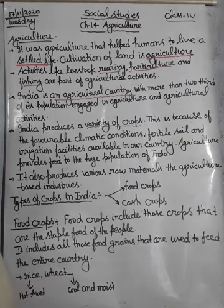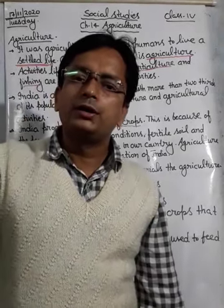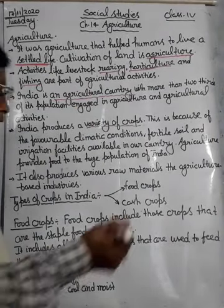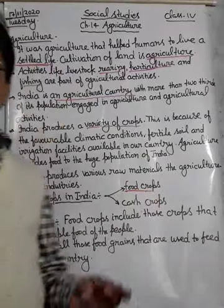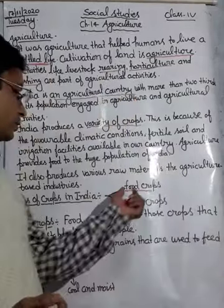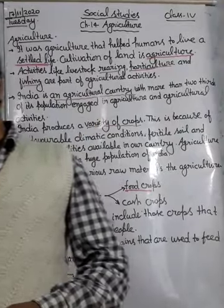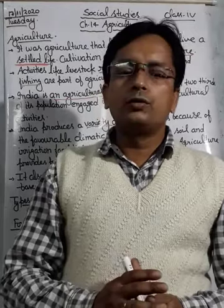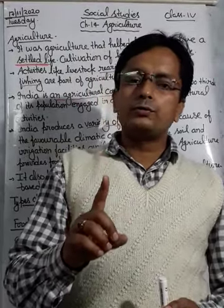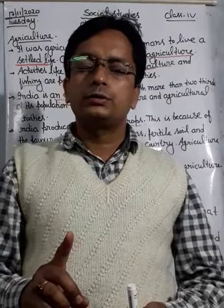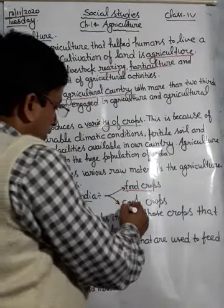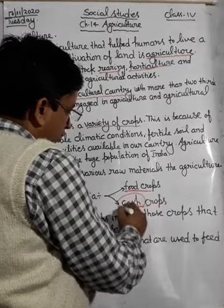Now let's look at types of crops in India. There are two types of crops in India: food crops and cash crops. Food crops are those that we grow for our own consumption — the food that we eat. The main aim of producing food crops is for our use.